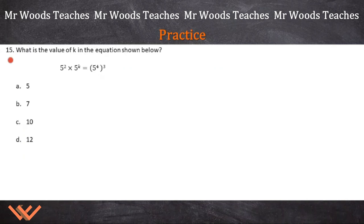15. What is the value of k in the equation shown below? So it's looking for the value of k. So I have 5 squared times 5 to the k is equal to 5 to the 4th, parentheses around it, cubed. First thing I want to do is get this going here. So I have 5 squared times 5 to the k and this is going to be 5 to the 4th times the third. You see where I'm doing that? I got to put my equals in there. So now I have 5 squared times 5 to the k is equal to 5 to the 12th.